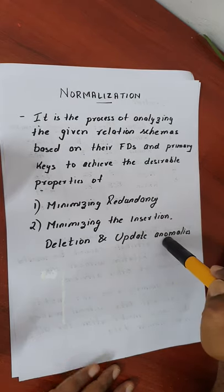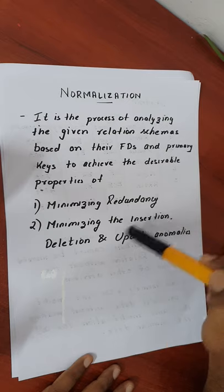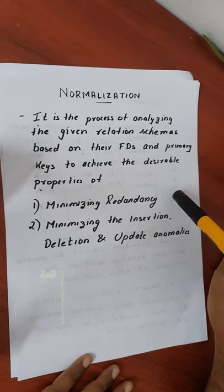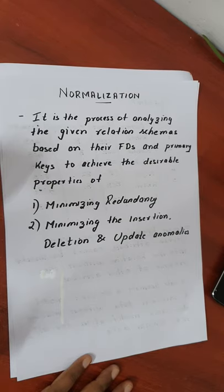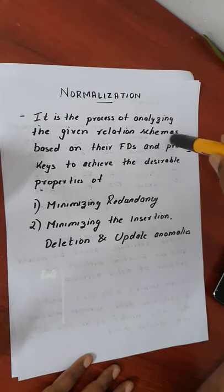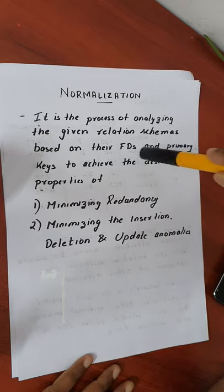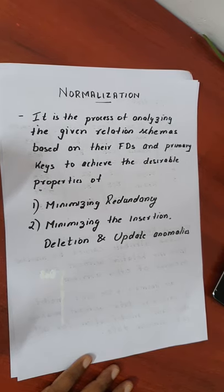We are going to discuss all these factors — how redundancy is going to happen, and how insertion, deletion, and update anomaly is going to happen. The main goal of the normalization process is to minimize redundancy. We are going to analyze the relation or the table based on functional dependencies as well as its primary key. These are the main properties we are going to achieve.